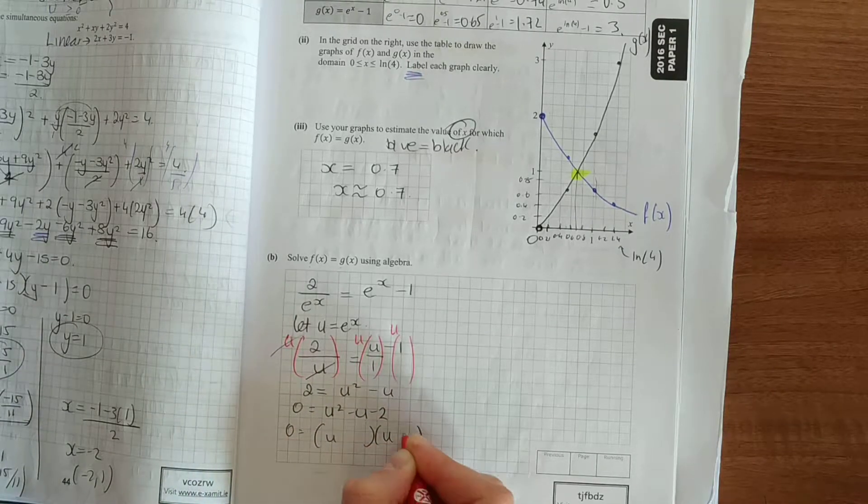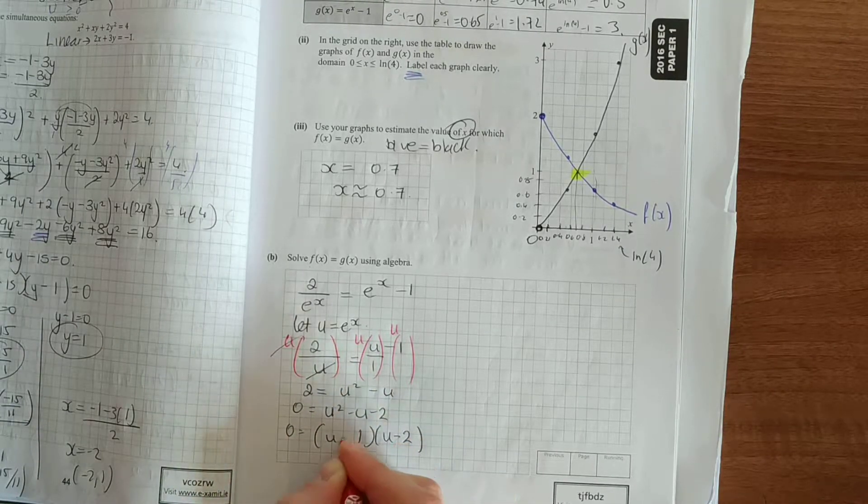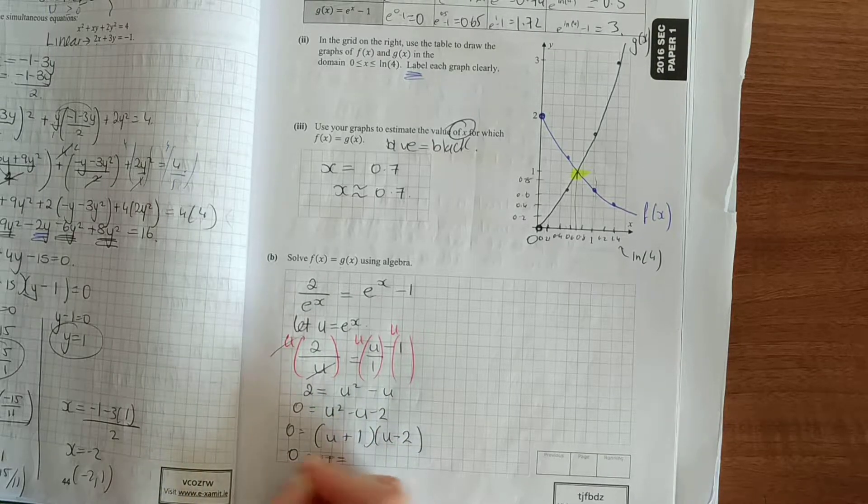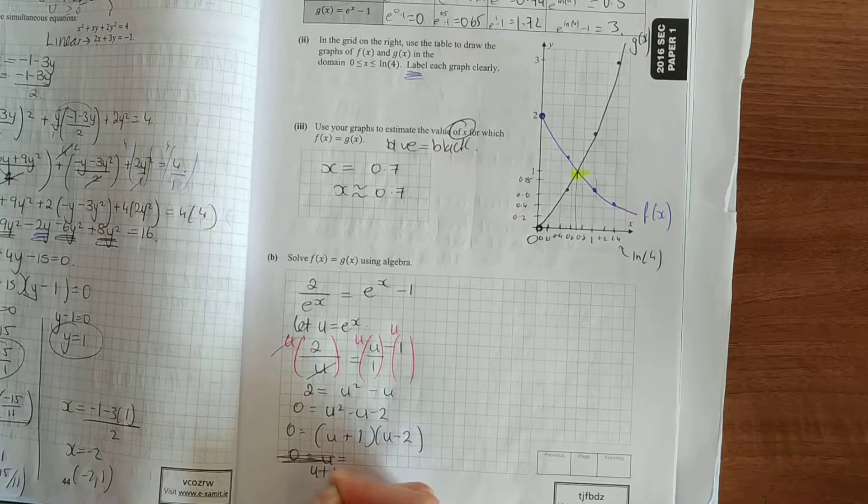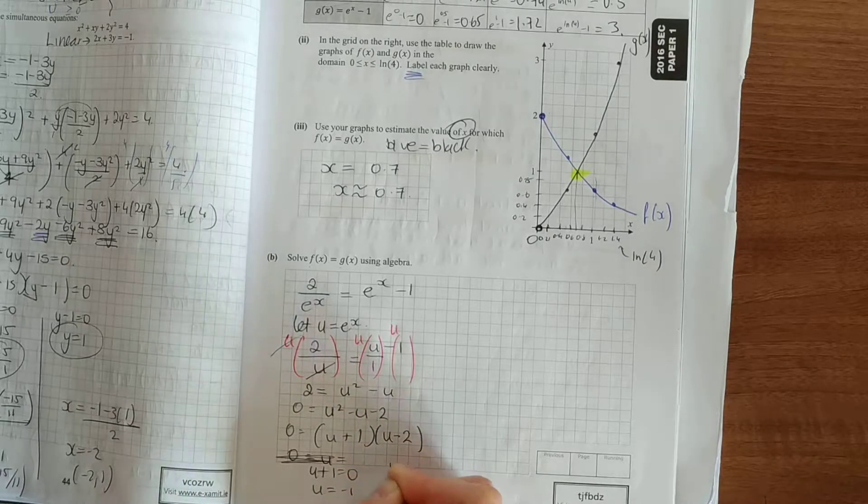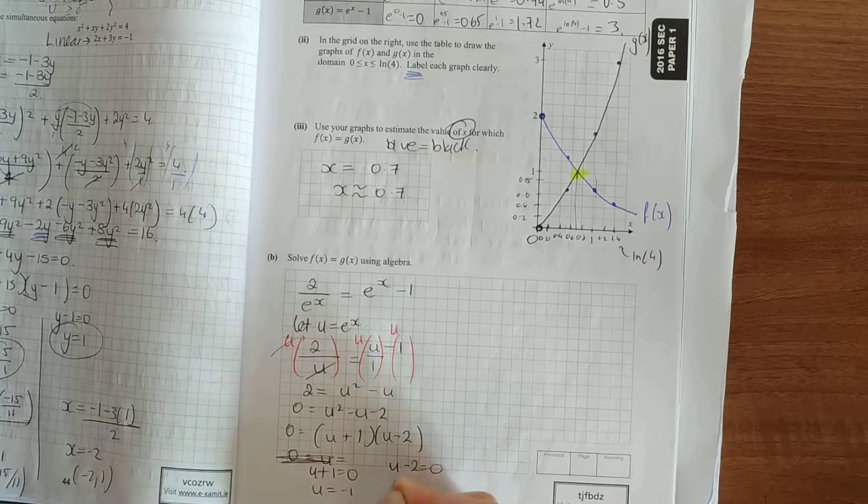And your quadratic here is as follows: u squared minus u minus 2 equals 0. Open up your brackets. u plus 1 equals 0, u equals minus 1. And u minus 2 equals 0, u equals 2.